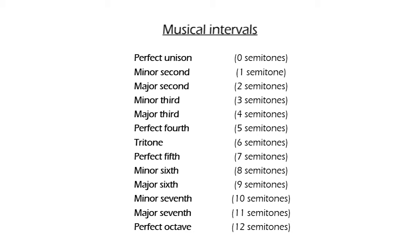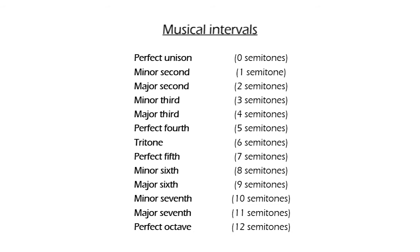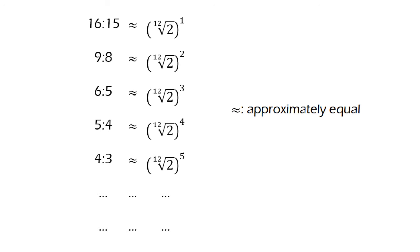If we use these intervals as semitone increments, there is no problem with using them in any tuning. However, sometimes they are represented numerically with just intonation ratios, which would give us the exact frequencies of the notes only in that specific tuning. So if we are in equal temperament, which is based in powers of the 12th root of 2, these ratios will only be approximations to the exact ratios we actually have.